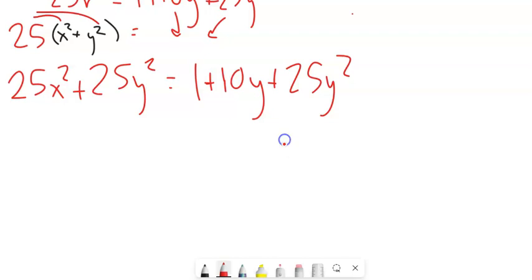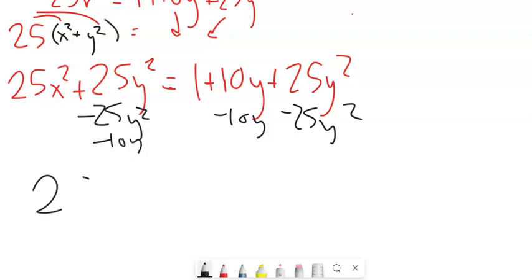And just to get it all together, you can either get this right side equal to 1 or get it equal to 0. But let's do that. Let's get it equal to 1 in this case. Subtract 25y squared from both sides, which is nice. That goes away. And subtract 10y from both sides. And I might write this as 25x squared minus 10y equals 1.